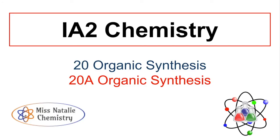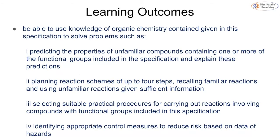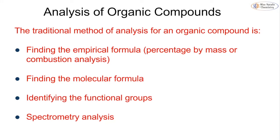This topic is going to be looking at organic synthesis, focusing on the very last topic pulling together all of our knowledge of organic topics, finishing off the A2 chemistry course. We're going to look at how to deduce empirical formula, molecular formula, and structural formula using different analysis techniques: combustion analysis, characteristic reactions of functional groups, spectra including infrared, mass, and NMR. We'll also look at how we can increase the length of a carbon chain using Grignard reagents, predict properties, set up reaction schemes, select suitable practical procedures, and think about hazards.